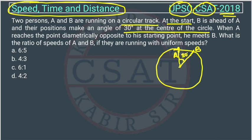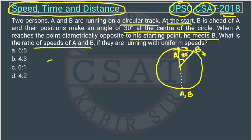When A reaches the point diametrically opposite to his standing point, he meets B. So when A reaches here, A is running like this, B is also running like this. A reaches here, and at the same time B also reaches here — opposite to his standing point, he meets B. What is the ratio of speed of A and B?